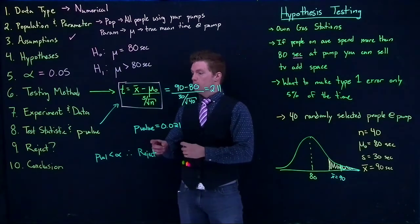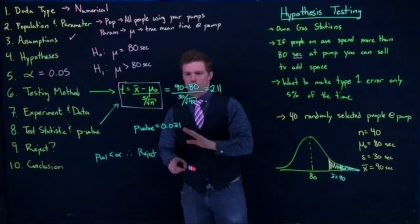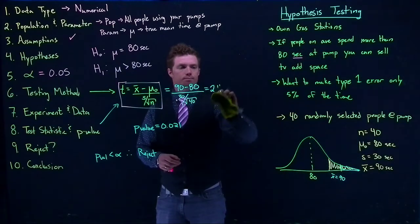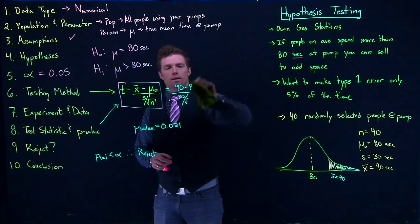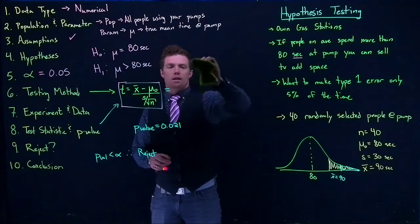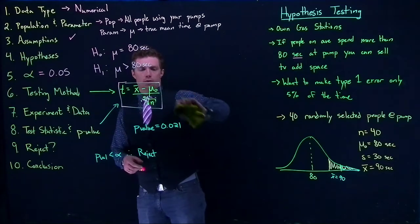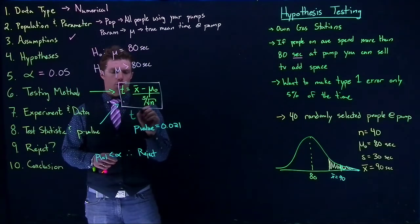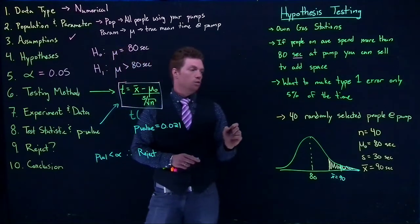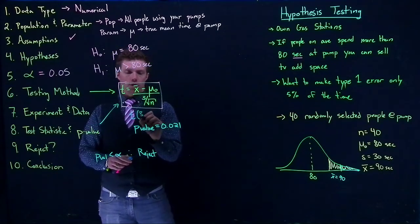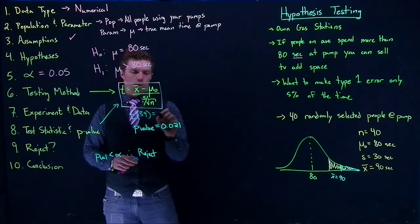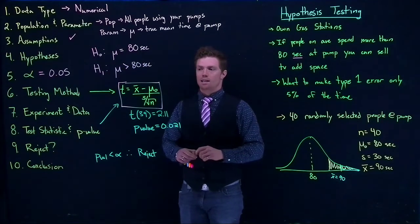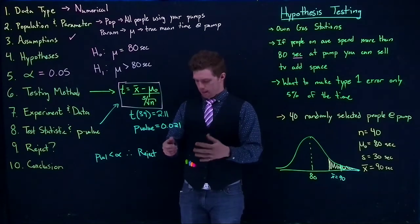We are going to reject the null hypothesis. Now we just need to write out our conclusion. With APA formatting, we include the t-value and degrees of freedom, which is n minus 1, equals 39. So t(39) equals 2.11.